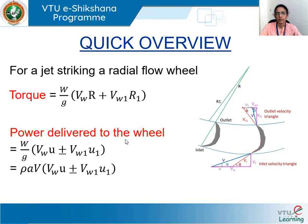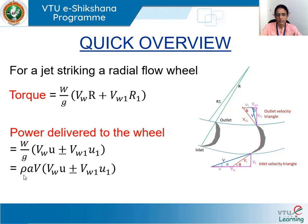The power delivered by the fluid to the wheel is given by the torque multiplied by the angular velocity, which converts to the form W/g · (Vw·U ± Vw1·U1). We use a plus sign when the jet angle at the outlet is less than 90 degrees and a minus sign when the jet angle is more than 90 degrees. This mass flow rate W/g can also be expressed as ρAV.